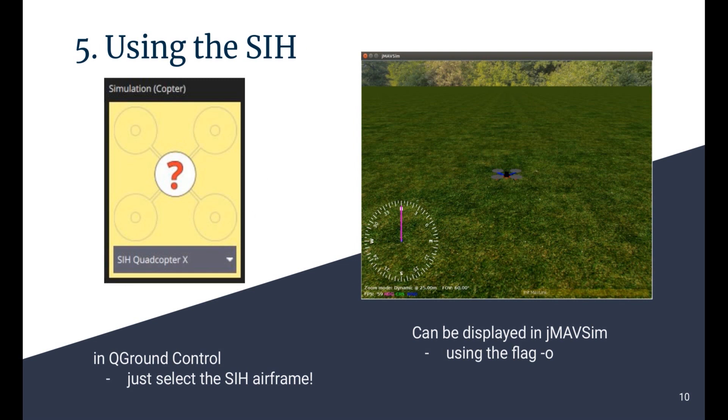How to use the SIH? Well, this is as simple as selecting the SIH airframe, and that's it. Jmafsim was also modified to be able to display the states of the vehicle running in the SIH. For this, Jmafsim must be started with the flag dash O.